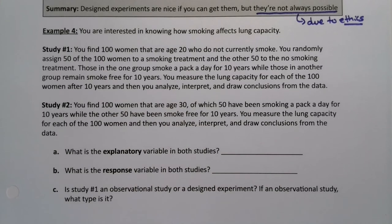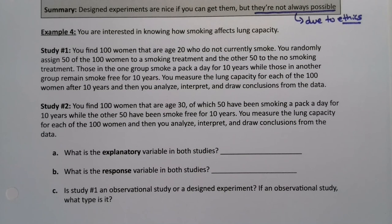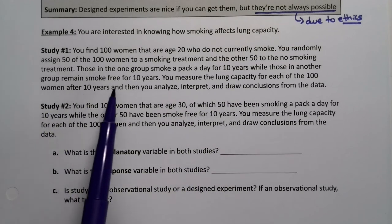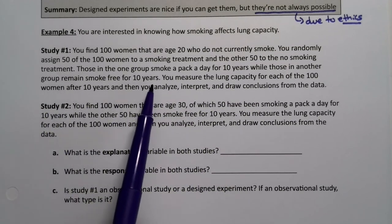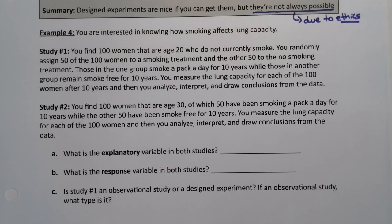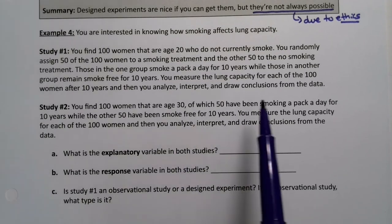Let's look at the effect of smoking on lung capacity. In study number one, you find 100 women age 20 who do not currently smoke. You randomly assign 50 to a smoking treatment and the other 50 to a no-smoking treatment for 10 years — those in one group smoke a pack a day for 10 years, while those in the other group remain smoke-free. You then measure lung capacity for each of the 100 women after 10 years, and analyze, interpret, and draw conclusions.